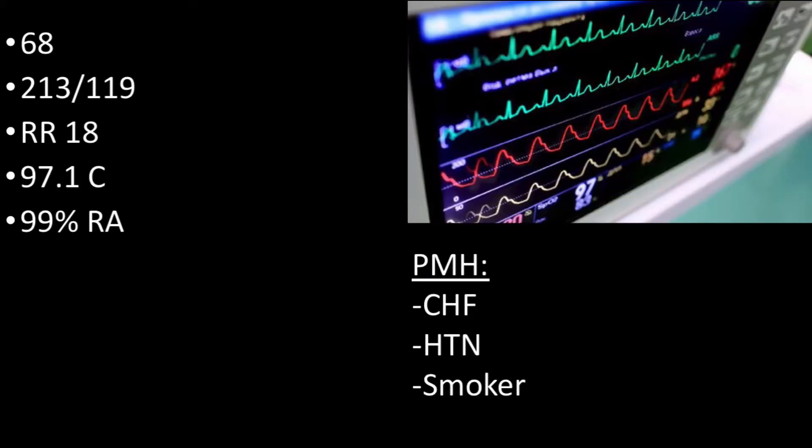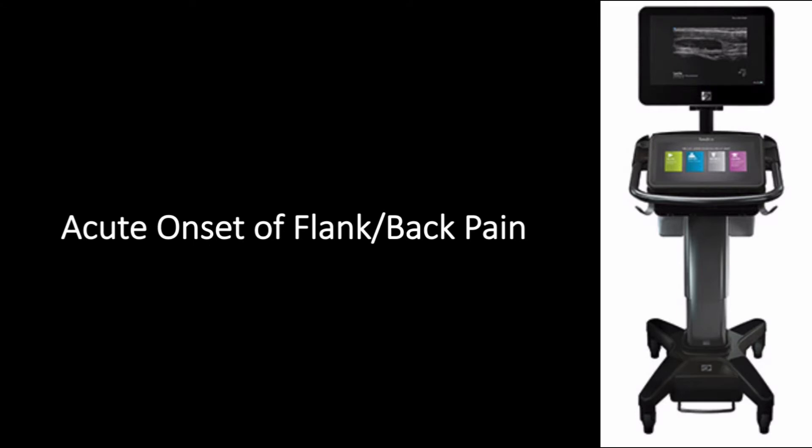His vitals were documented in triage and found to be remarkable for a markedly elevated blood pressure. He had a medical history marked for CHF, hypertension, and tobacco abuse. On exam, he was found to be in moderate distress secondary to his pain, and the resident documented that he was writhing and kept changing positions. His back exam did not display abnormality, and his abdomen was found to be soft without tenderness or guarding. Given the patient's distress on exam, the resident managing the case felt that his differential could be honed with utilization of bedside ultrasound.